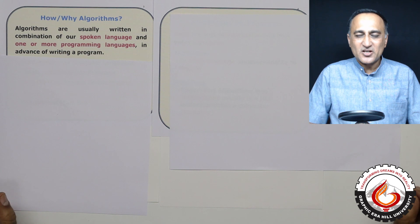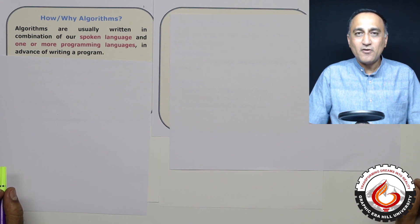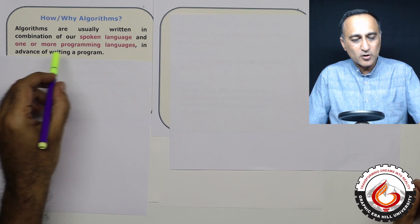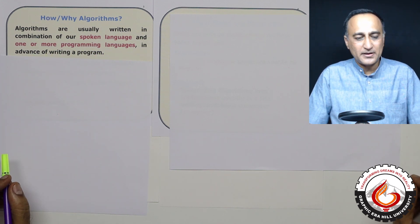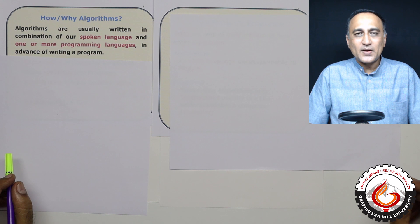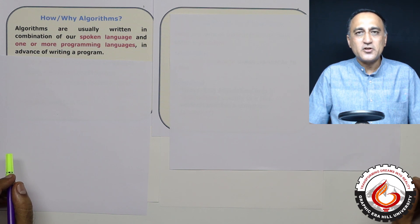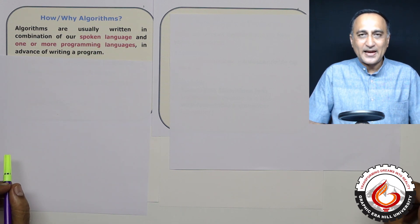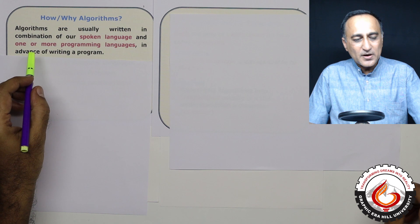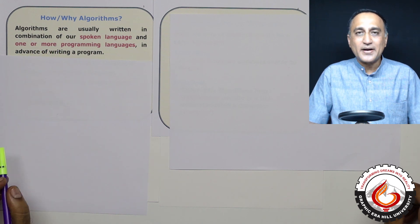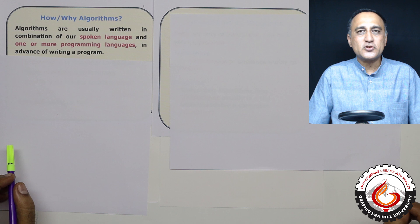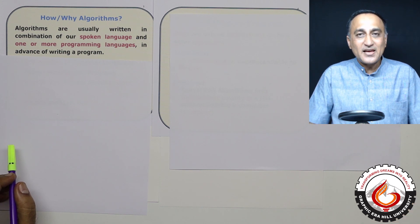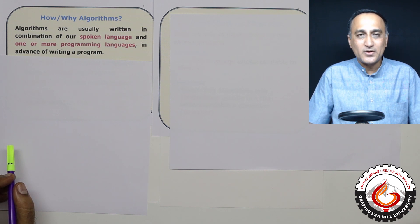Algorithms are generally written in a combination of spoken language and one or more programming languages. Let me tell you what I mean by that. Spoken languages means we are using English to teach you programming. So we will be using English-like language as well as the language of algorithms we are going to write. It's going to be slightly close to C, but not at all like C, because generally algorithms are meant to be independent of any programming language you write.